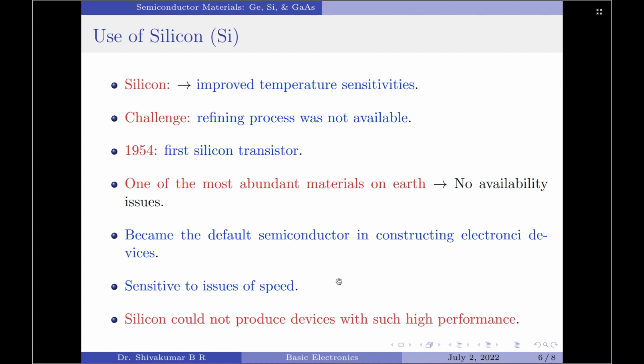That is, I am talking about the 1940s and 1950s. However, as time progressed, the refining process was finally found and in 1954, the first silicon transistor was introduced. With that, silicon very quickly became the semiconductor material of choice.